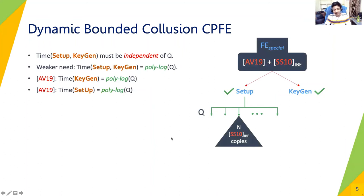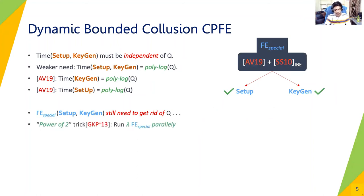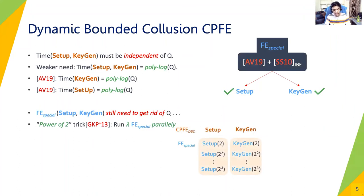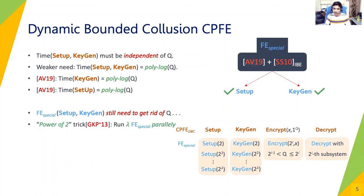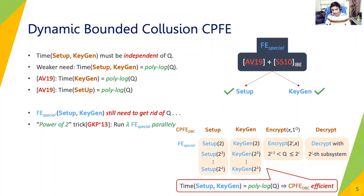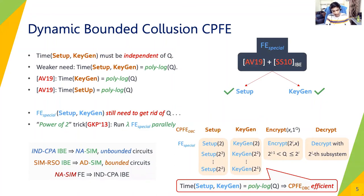Now that we have a special FE scheme where setup and keys are polylog in Q, we use the powers-of-2 trick from GKPVZ13 to eliminate Q as follows. We run setup and keygen for λ subsystems in parallel, where the i-th instance corresponds to collusion bound 2^i. When encrypting, the encryptor chooses the smallest 2^i exceeding Q and encrypts the message using the i-th subsystem. Decryption is performed using the secret key generated using the i-th subsystem. The resulting scheme is efficient since runtime of setup and keygen is only polylog in Q.